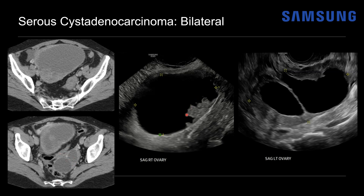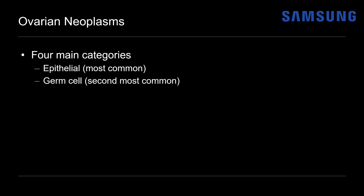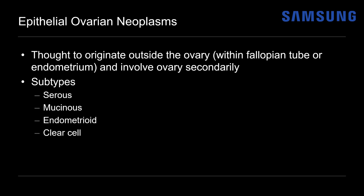Notice how the mural nodularity and papillary projection are better seen on ultrasound compared to CT. Taking a step back to review the broad categories of ovarian neoplasm: there are four main categories — epithelial (most common, as in this case), germ cell (second most common), sex cord stromal tumors, and metastatic lesions. Epithelial ovarian neoplasms are actually thought to originate outside the ovary, within the fallopian tube or endometrium, and involve the ovary secondarily. The major subtypes are serous (most common), followed by mucinous, endometrioid, clear cell, and Brenner tumors.